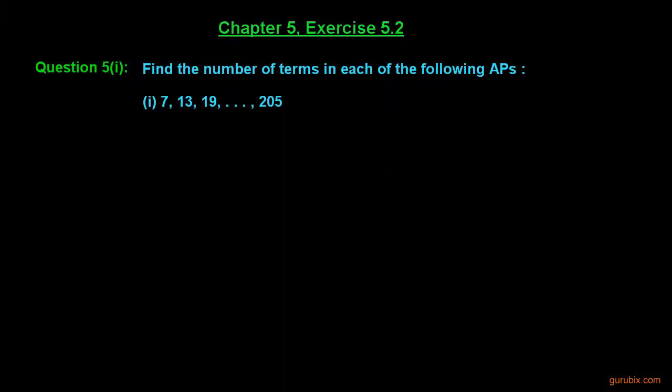Here is the first part of question number 5 of exercise 5.2 of chapter 5. We are asked to find the number of terms in each of the following APs. We are given two APs. Let us see the first part of this question.